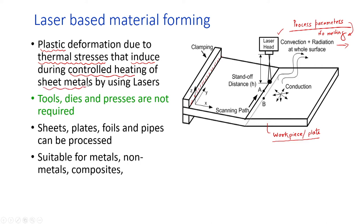Various mechanisms were covered — the temperature gradient mechanism, upsetting mechanism, and buckling mechanism. Advantages include no need for tools or dies, saving a lot of time, and very short product lead times. This process is useful for sheets, plates, foils, and even pipes, and the laser-based bending process is applicable to metals, non-metals, and composites as well.